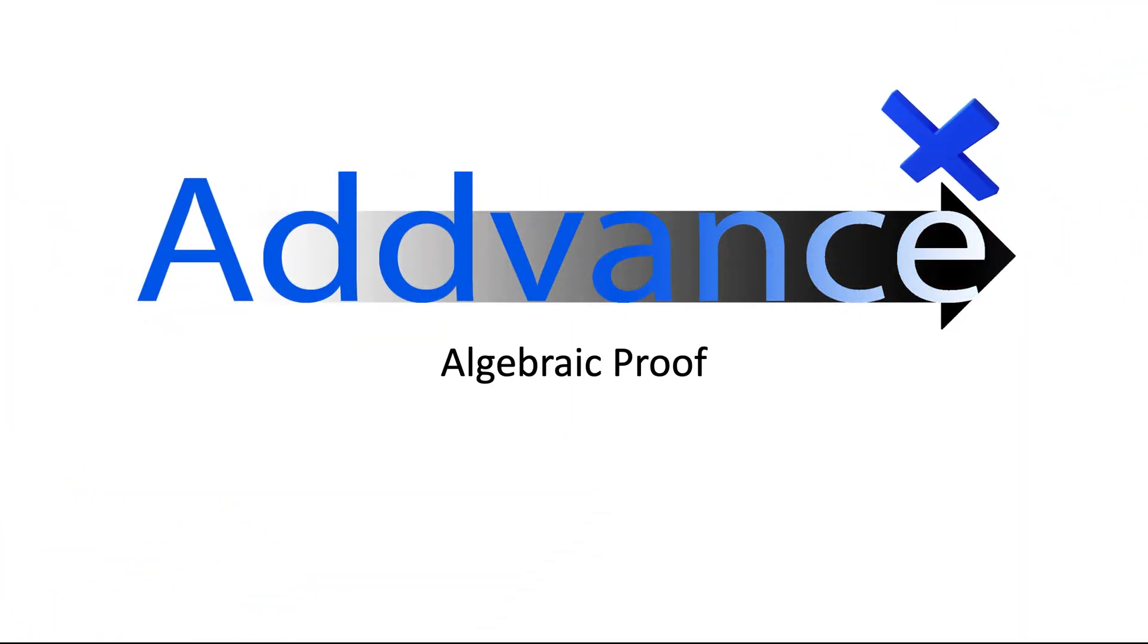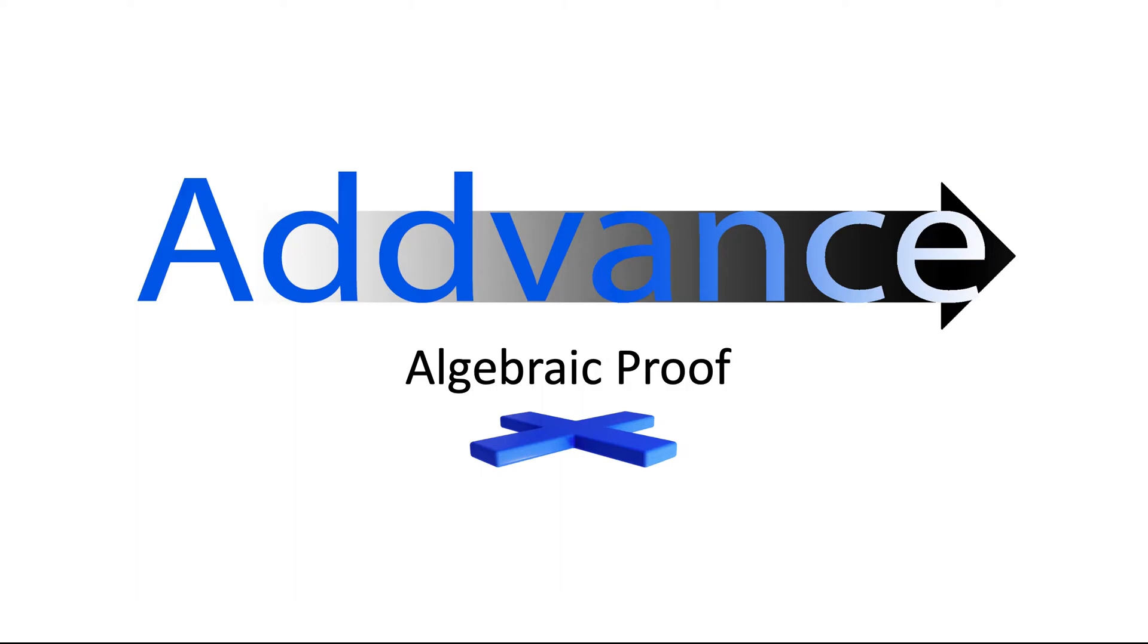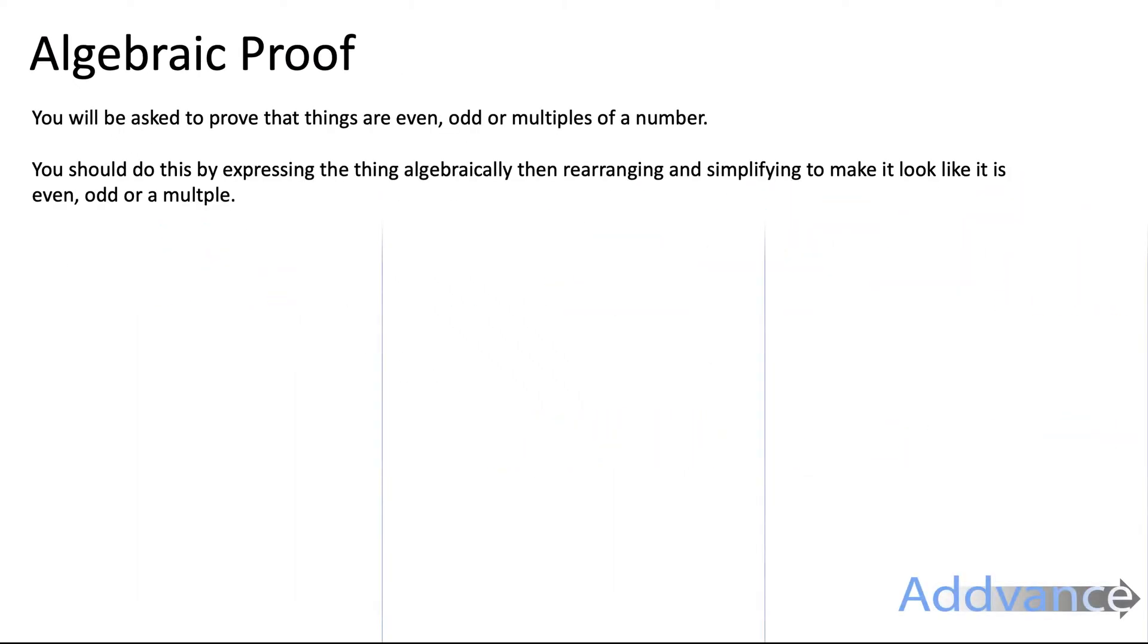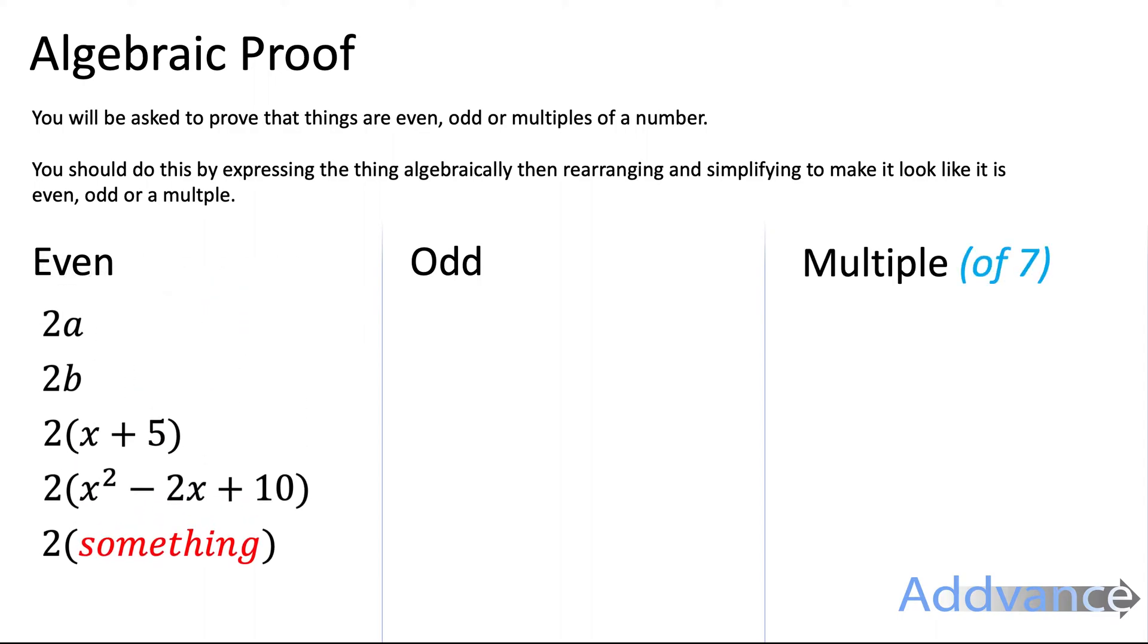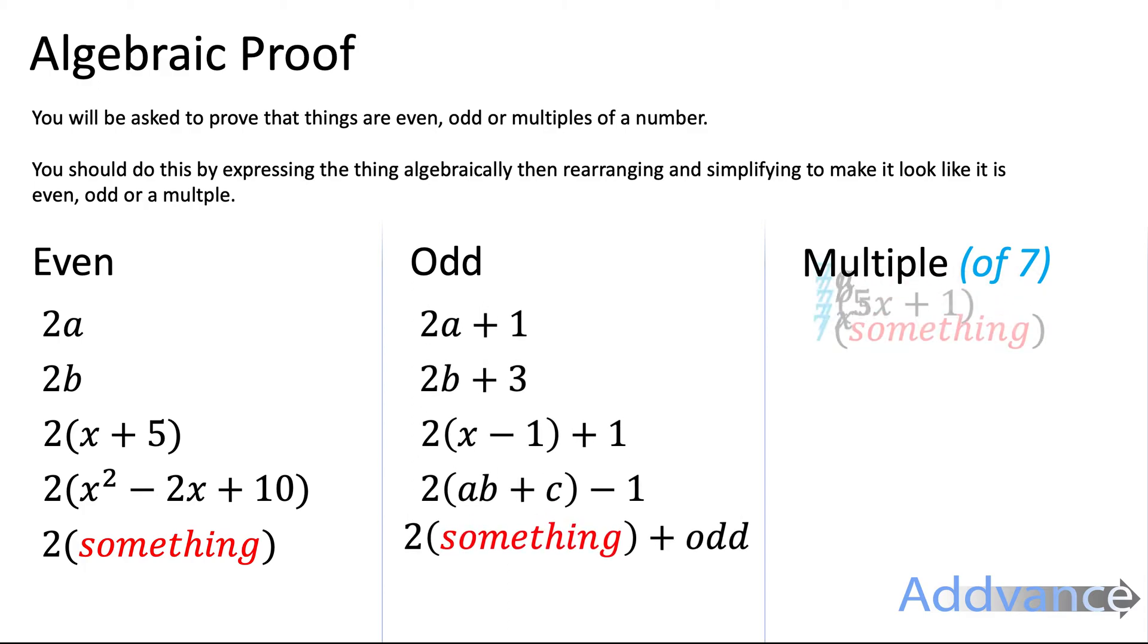Hello everybody and welcome back to Advanced Maths. Today we're looking at algebraic proof. In exams you'll be asked to prove that things are even, odd or multiples of a number. You should do this by expressing the thing algebraically and then rearranging and simplifying to make it look like it is even, odd or a multiple.